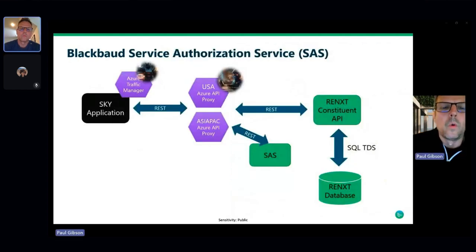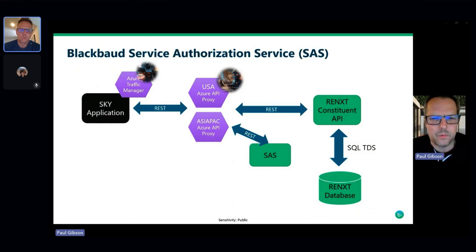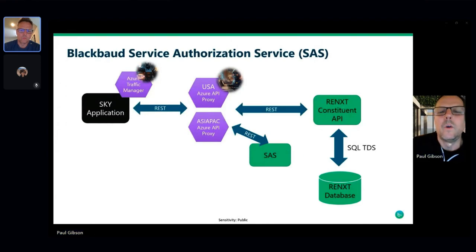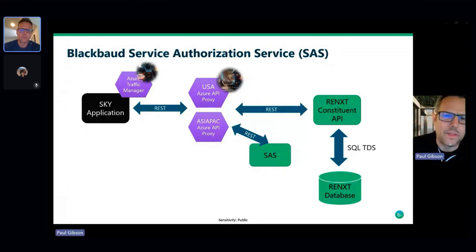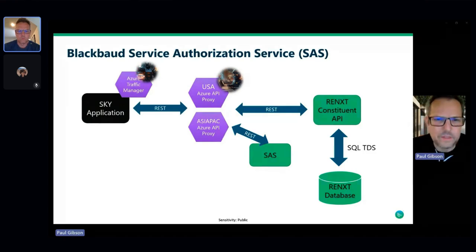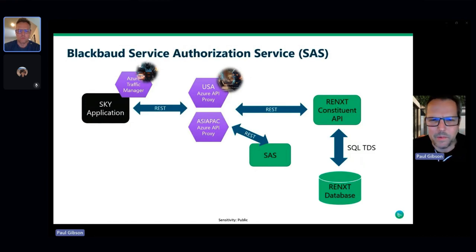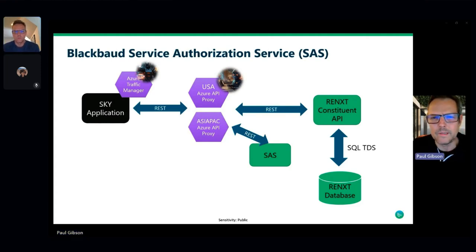The Service Authorization Service is needed for the proxy to call the constituent API. When a call comes in to the proxy, the proxy calls SAS to get a ticket — proving itself to SAS, which checks its database to confirm the Azure proxy is authorized to call the constituent API. SAS validates that, issues a ticket back to the proxy, and the proxy then calls the constituent API with that ticket. It sounds a little confusing, but that's the zero-trust flow.